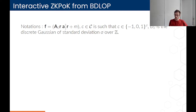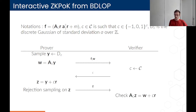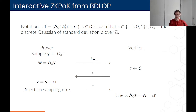To prove knowledge of the message in a BDLOP commitment, what you do is give a zero-knowledge proof of knowledge of the short randomness R that was used during the commitment.